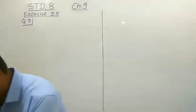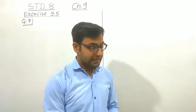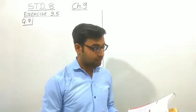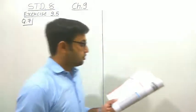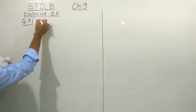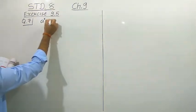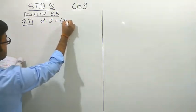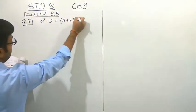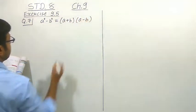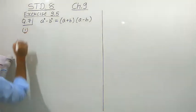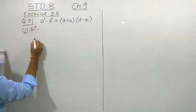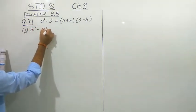So what is the question? Using a squared minus b squared equals to a plus b, a minus b. Here we have given 4 subquestions. We have to use Identity number 3, that is a squared minus b squared equals to a plus b into a minus b.